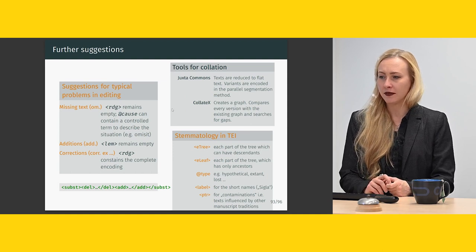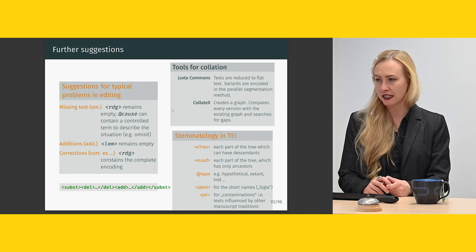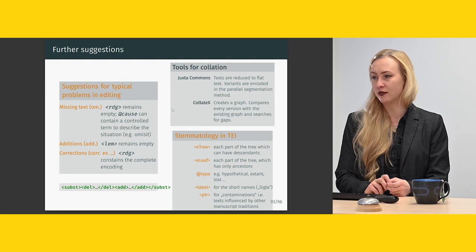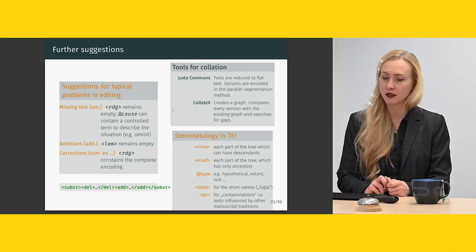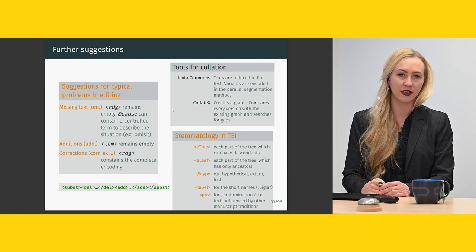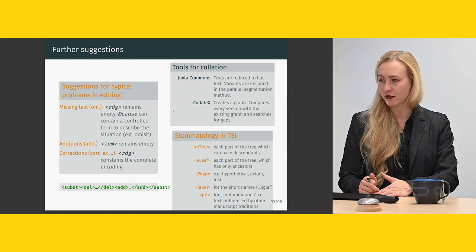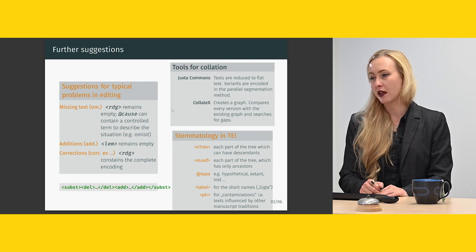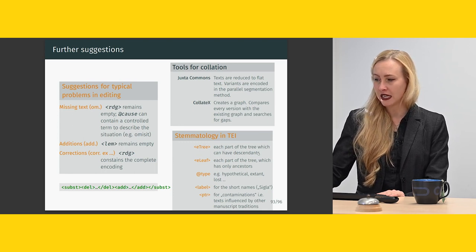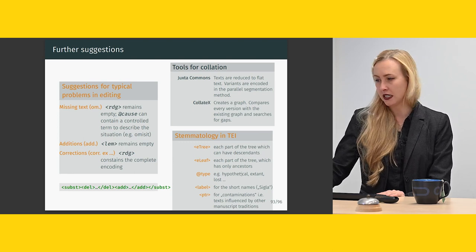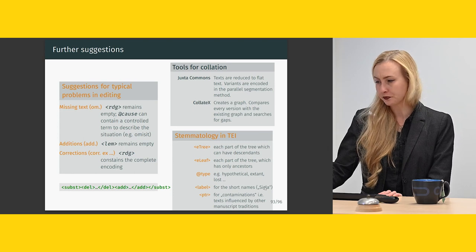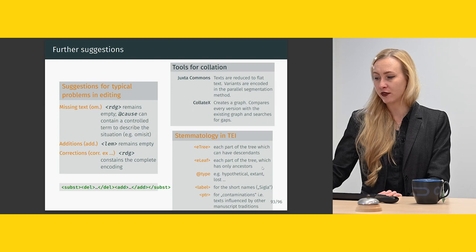There are also tools for collation. There used to be Juxta Commons, but I think it's no longer available, where variants were reduced to flat texts and encoded in the parallel segmentation method. There's CollateX, created by a colleague from Vienna, Tara Andrews — this creates a graph and compares every version with the existing graph and searches for gaps. I can also do stemmatology in TEI using 'eTree'. That's 'eTree' for each part of the tree which can have descendants, and 'eLeaf' for each part of the tree which only has ancestors, with 'type' for hypothetical, extant or lost, 'label' for indicating short names or sigla, and 'ptr' for contaminations — i.e., text influenced by other manuscript traditions.